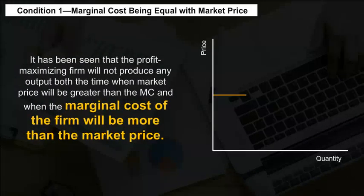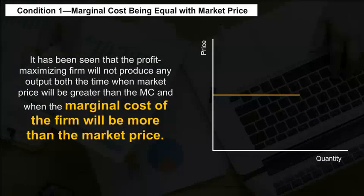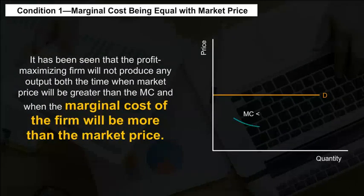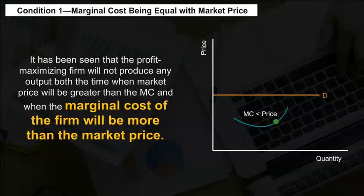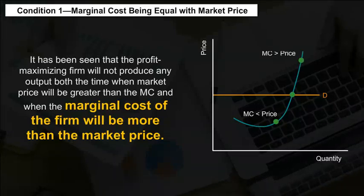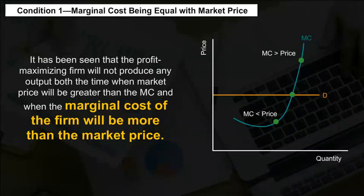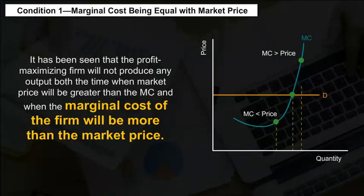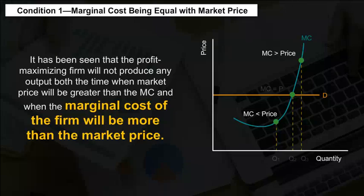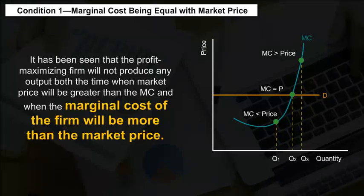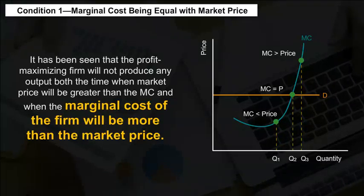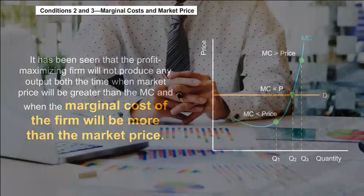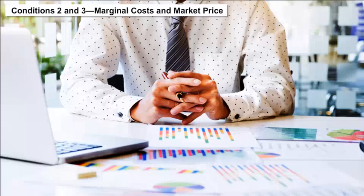Condition 1 — Marginal Cost Equal to Market Price. The profit-maximizing firm will not produce any output both when the market price is greater than the MC and when the marginal cost of the firm is more than the market price.